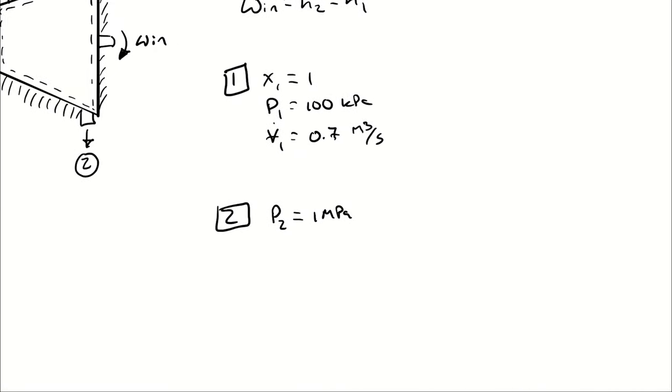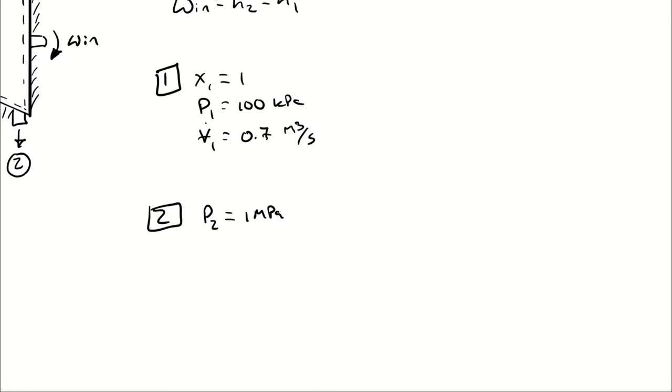So what I have to do is actually set up a third hypothetical state point, State 2s. State 2s represents what the outlet condition would be if everything were perfect. State 2s does not exist. State 2 exists. State 2s is just imagining, what if everything were perfect?